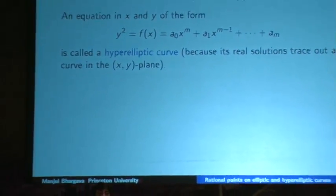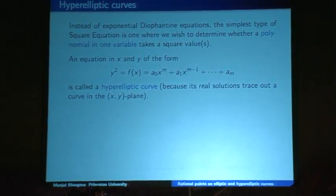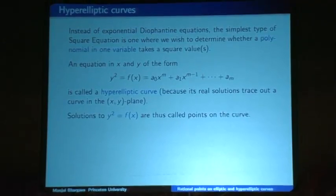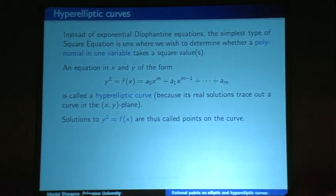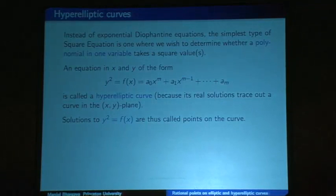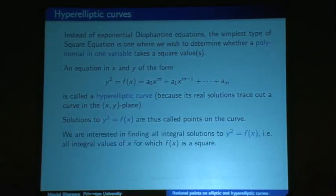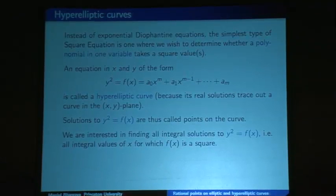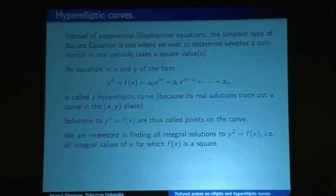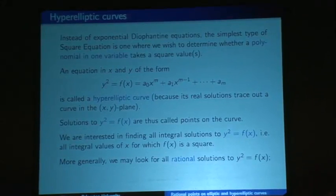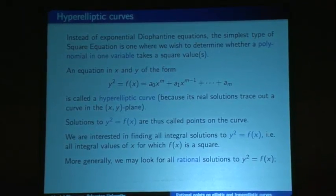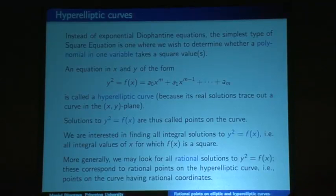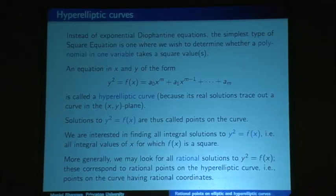An equation in x and y of the form y² = f(x) is called a hyperelliptic curve, and we're interested in integer solutions and rational solutions to such equations. A solution to y² = f(x) is called a point on the curve, because if you were to graph this curve, a solution would be a point on that graph. We're interested in finding all rational solutions to y² = f(x) — that is, all rational values of x for which f(x) is a square. These correspond to rational points on the hyperelliptic curve, where both coordinates are rational.